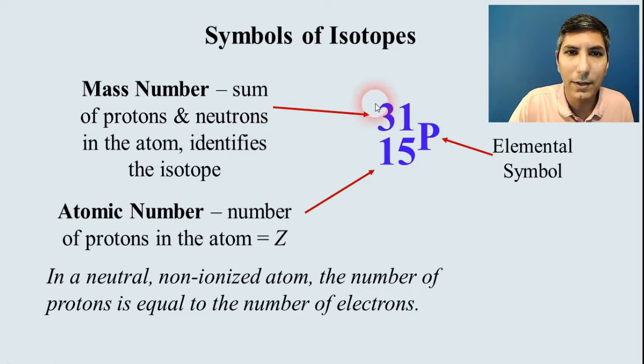well, you're going to have to take the top number, this mass number, and subtract the bottom number. So this particular isotope would have 16 neutrons in it.